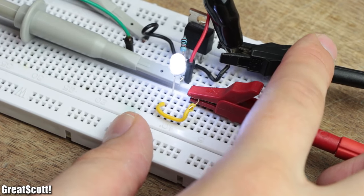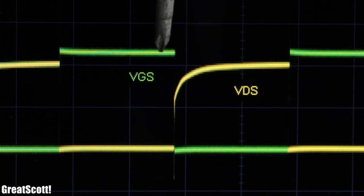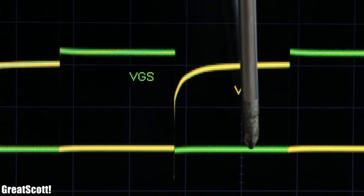So let's inspect the voltages on the oscilloscope. While the Arduino voltage goes high, the drain-to-source voltage goes low, and the other way around. Perfect!